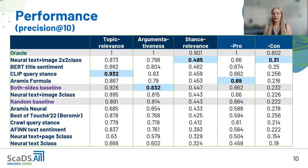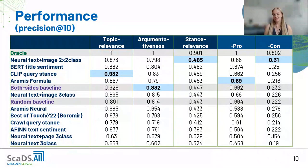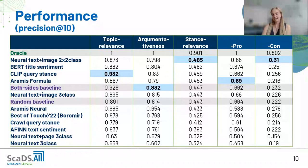We also observed that the oracle only reaches 80%, meaning there are on average only about 8 images out of the 10 we look for per query — not enough to reliably retrieve results.